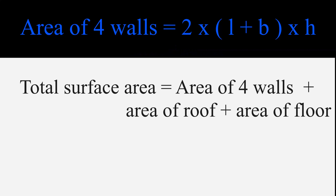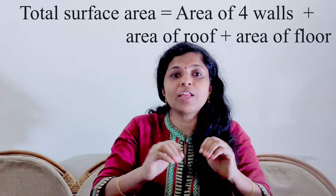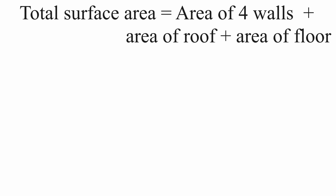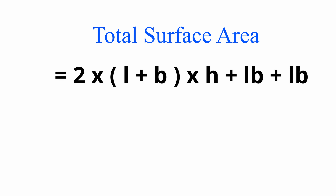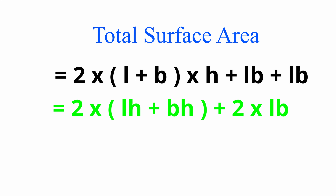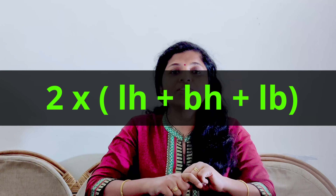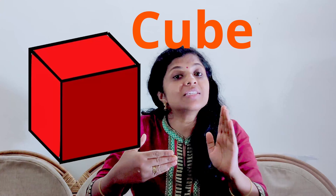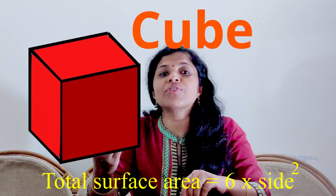Another important property of a solid is its total surface area. As the name suggests, the total surface area is the area of all surfaces. Since we already have the area of the four walls, we just need to add the area of the roof and the area of the floor. Area of the roof equals the area of the floor, which equals L × B. Therefore, total surface area of a cuboid is 2 × (LH + BH + LB). For a cube, all surfaces have the same area — side² — and we have 6 such sides, so total surface area of a cube is 6 × side².